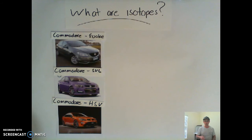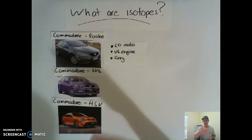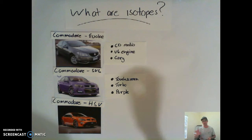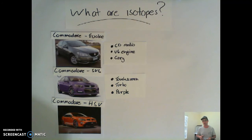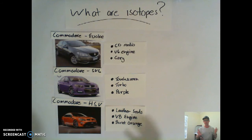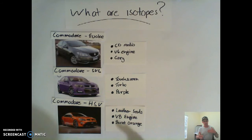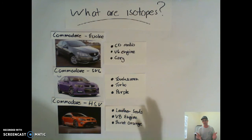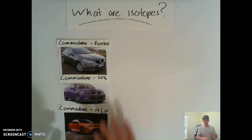So if we were to have a look at the Commodore Evoke, it's just got a CD player, it's got the normal V6 engine, and it's that dull grey colour. If we have a look at our SV6, well, it's got a touchscreen display and the radio and CD and Apple CarPlay, all that sort of stuff through the touchscreen. It's got a turbo engine, and it's this nice purple colour. And then when we go to the top of the range, we've got our HSV. It's got the leather seats, it's got a V8 engine, it's that burnt orange colour, it's got all the bells and whistles in it. Even though they're all different colours and different versions, they're still a Holden Commodore. They still have the same type of styling, that same shape.